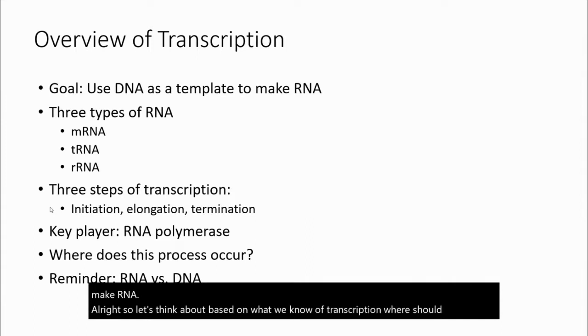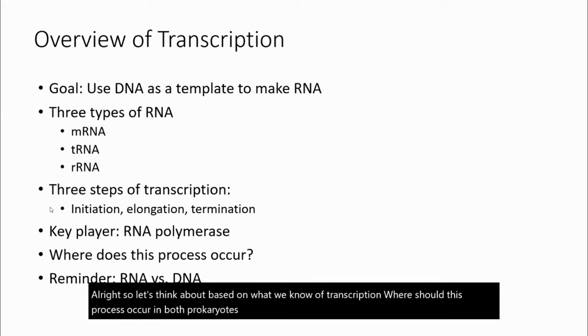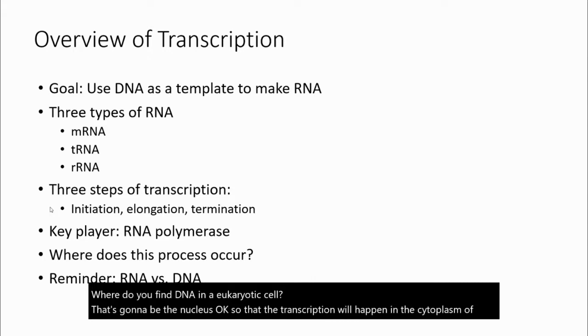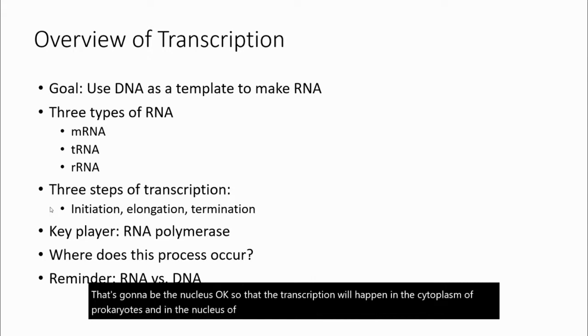Let's think about where this process should occur in both prokaryotes and eukaryotes. Our starting material is DNA. So where do you find DNA in a prokaryote? In the cytoplasm, on the inside of the cell. Where do you find DNA in a eukaryotic cell? That's going to be the nucleus. So transcription will happen in the cytoplasm of prokaryotes and in the nucleus of eukaryotes, which is where the starting material is found.